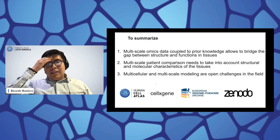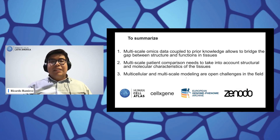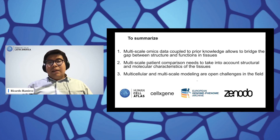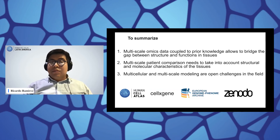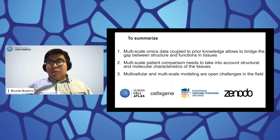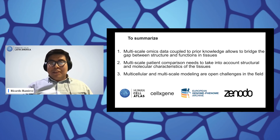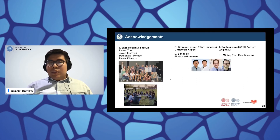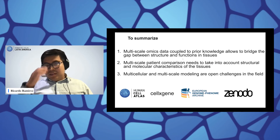To summarize, multiscale omics data coupled to prior knowledge allows us to bridge the gap between structure and function in tissues. Multiscale patient comparison is not trivial and needs to take into account lots of different characteristics — mainly structural and molecular — and multicellular and multiscale modeling are open challenges in the field. All of these data are available in different platforms, and very importantly I would like to thank Enrique, who helped us to put all these datasets in the Human Cell Atlas. I'd like to acknowledge the people with whom we did the work, especially the collaborative work with the groups of Rafael Kramann and Ivan Costa, led by myself, Shian Li, and Christoph Kuppe.